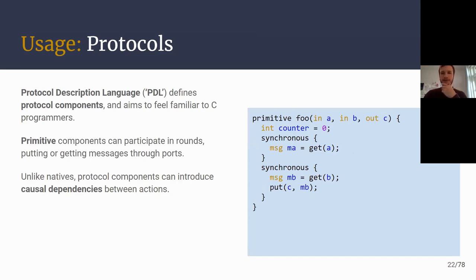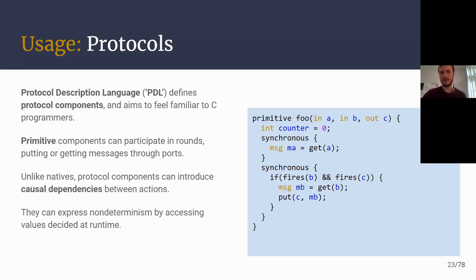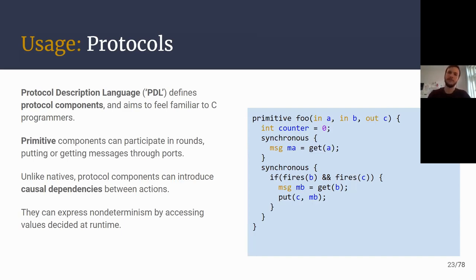Something that protocol components can do that natives cannot is express relationships between messages. In the second round, this component forwards a message from port B through port C — this is not possible as a native because you have to prepare your messages first and then reflect on them second. Protocol components can also express non-deterministic choice, but do so by specializing behavior in terms of reflection on values whose values you don't know a priori. Here, 'fires' is evaluated to true if and only if some port B receives a message. You don't know statically whether B fires; at runtime, B will either fire or it will not.